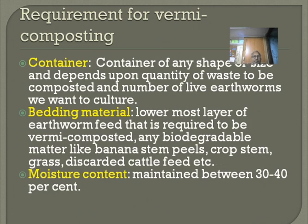Regarding container: a container of any shape or size can be used; it depends upon the quantity of waste to be composted and the number of live earthworms to be cultured. Bedding material is the lowermost layer of earthworm feed required to be vermicomposted. Any biodegradable matter like banana stem peel, crop stems, grass, or discarded cattle feed may be used as bedding material.